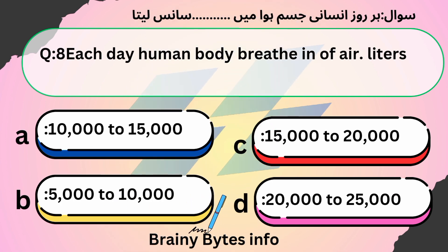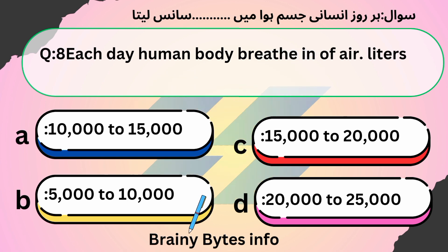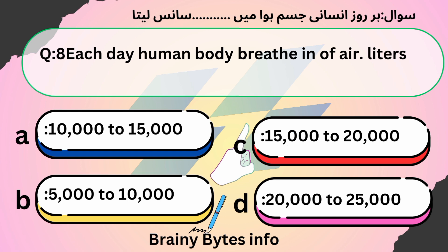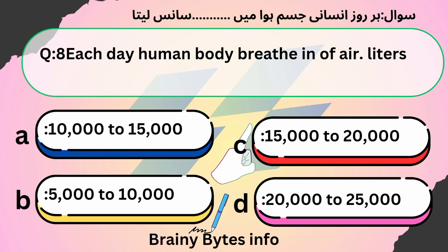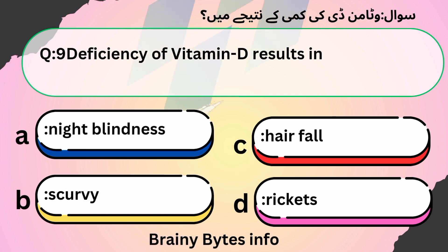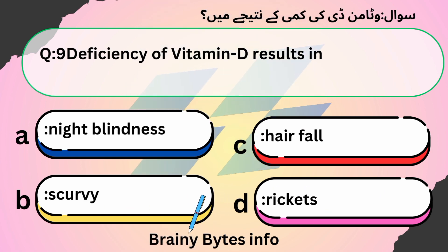Each day the human body breathes in how many liters of air? A. 10,000 to 15,000, B. 50,000 to 10,000, C. 15,000 to 20,000, D. 20,000 to 25,000. Answer: C. 15,000 to 20,000.